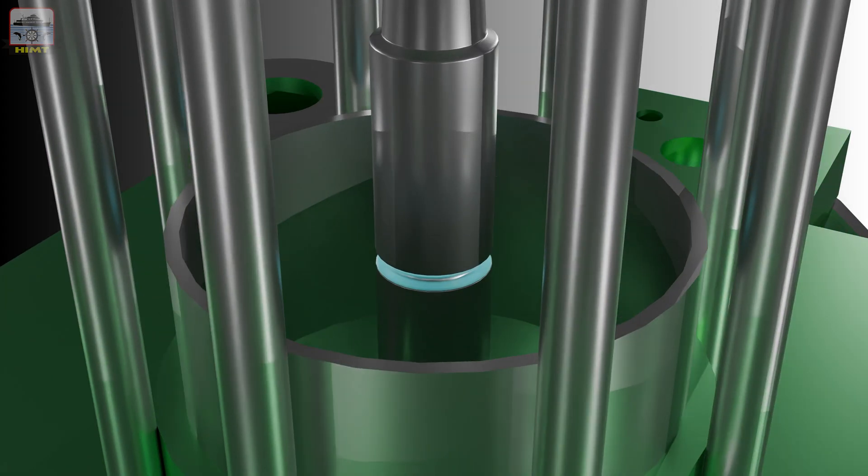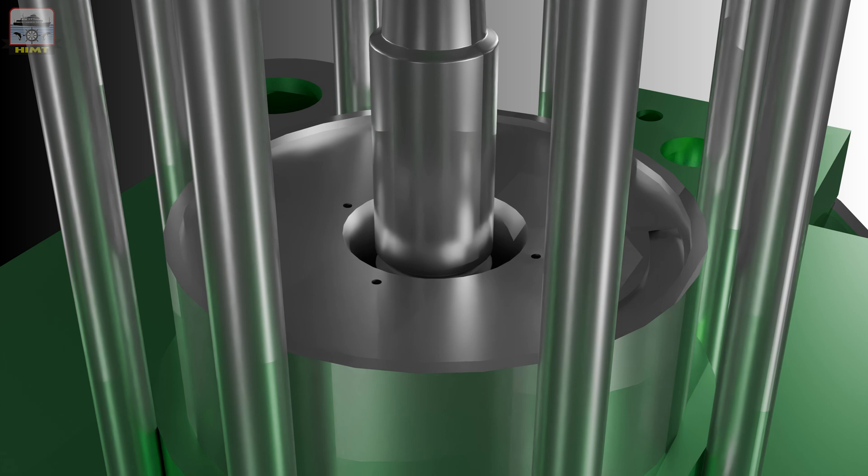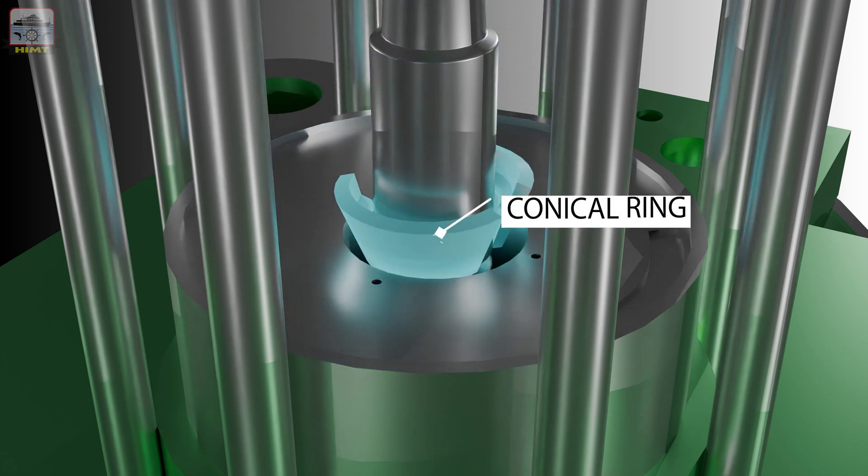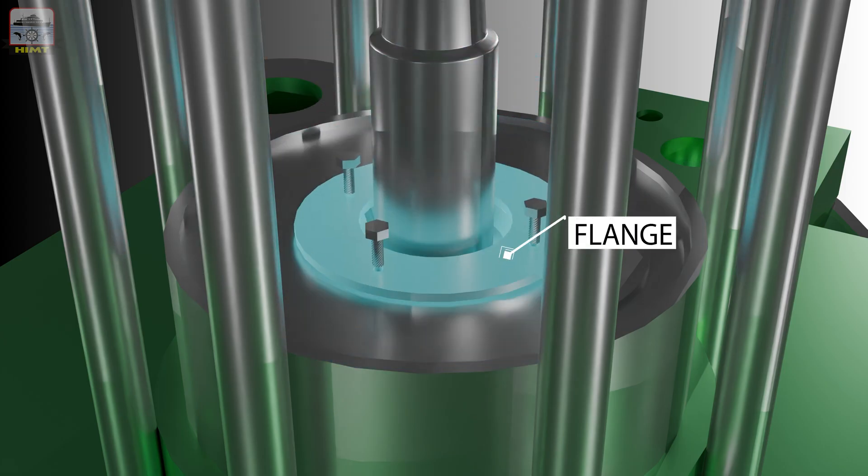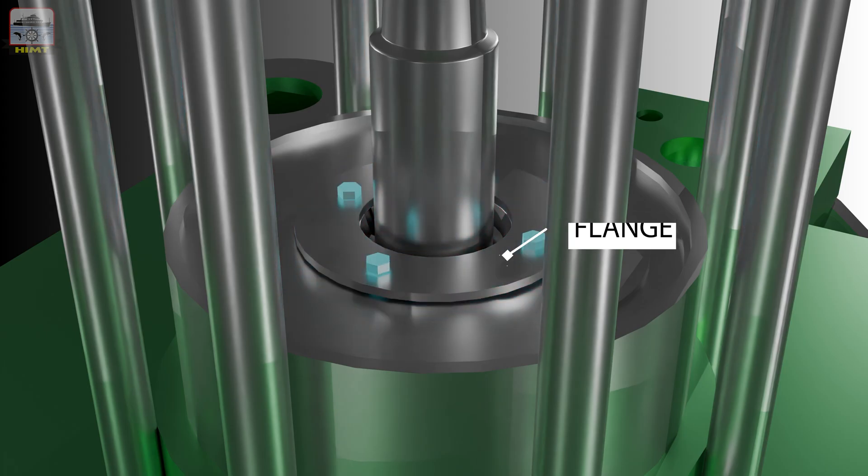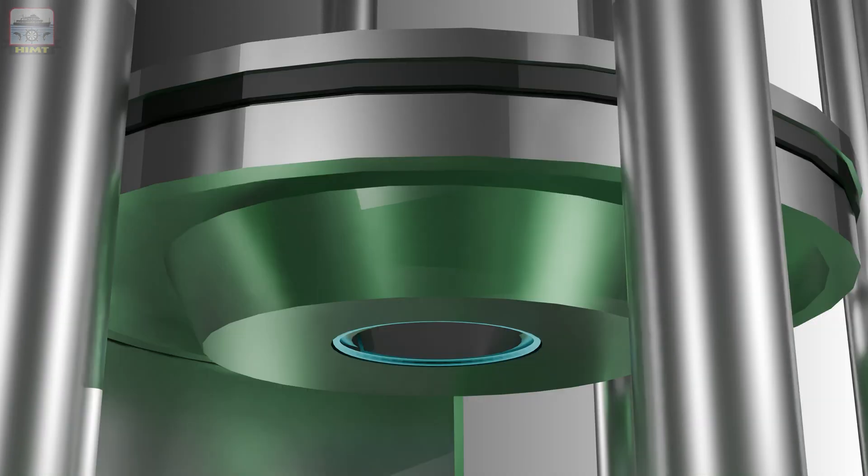The valve spindle has a groove where the split conical rings are fitted to lock the air piston onto the spindle. The air piston is lowered and held below this groove. Then the two halves of the conical ring are inserted into the groove. A flange is kept on top of the conical rings and the air piston is secured to the flange using bolts. The air piston moves inside the air cylinder.